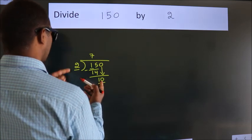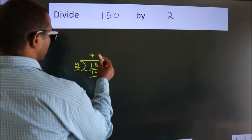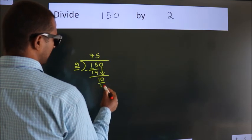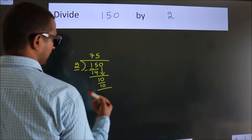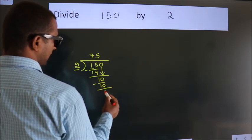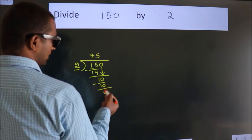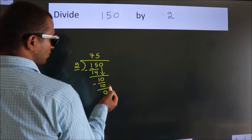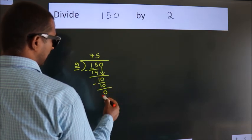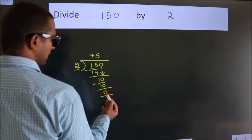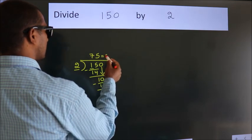When do we get 10 in the 2 table? 2 times 5 is 10. Now we subtract. We get 0. After this, no more numbers to bring down and we got remainder 0. So this is our quotient.